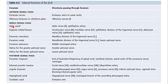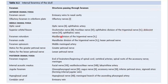In the middle cranial fossa, the optic canal passes the optic nerve and ophthalmic artery. The superior orbital fissure passes the oculomotor nerve, trochlear nerve, ophthalmic division of the trigeminal nerve, abducens nerve, and the ophthalmic veins.